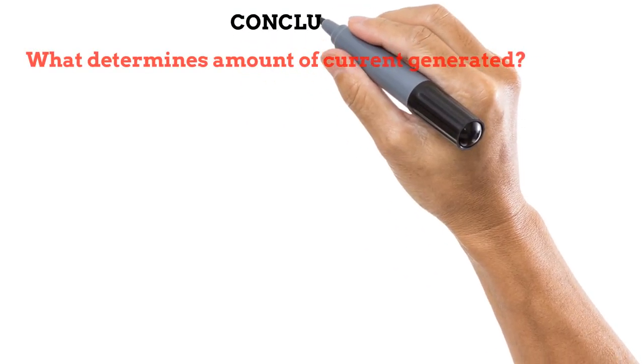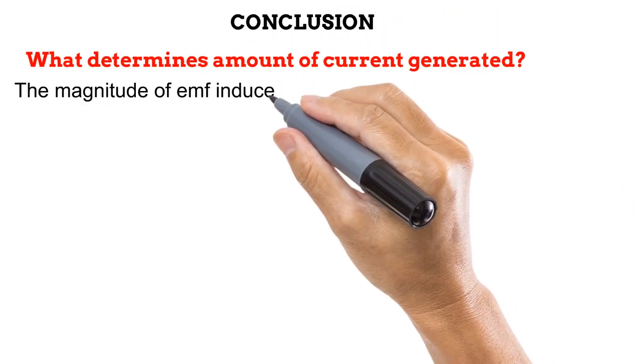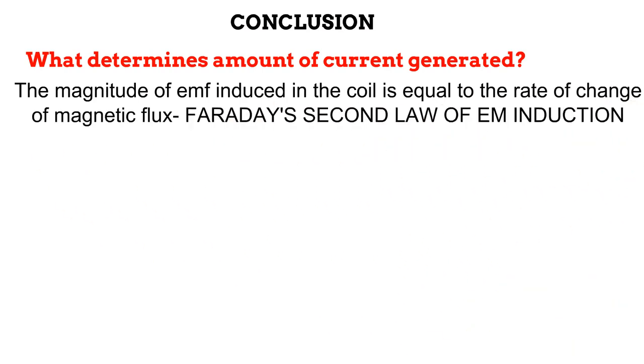Earlier in this video, we learned how a rotating loop of wire within a magnetic field causes a change in the magnetic field, which would go on to induce current, according to Faraday's first law of electromagnetic induction. But how do we determine how much current we are generating? Let us conclude by explaining this. The amount of current generated by this changing magnetic field is dependent on Faraday's second law of electromagnetic induction, which loosely states that the magnitude of electromotive force induced in the coil is equal to the rate of change of the magnetic flux. This means that how fast the loop of wire rotates determines how fast the magnetic field changes. And the faster the magnetic field changes, the more current generated.